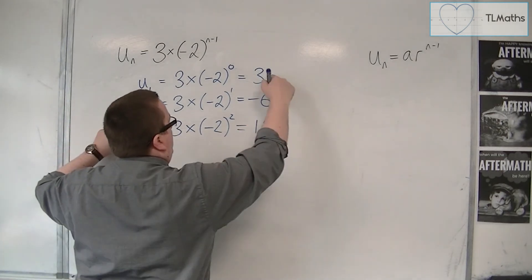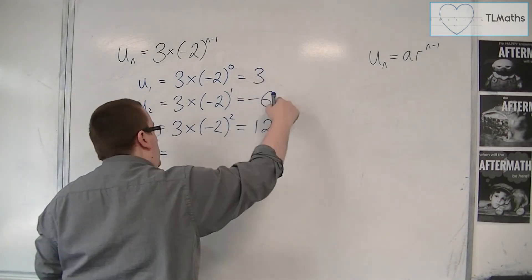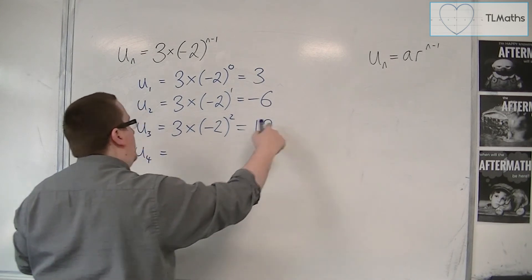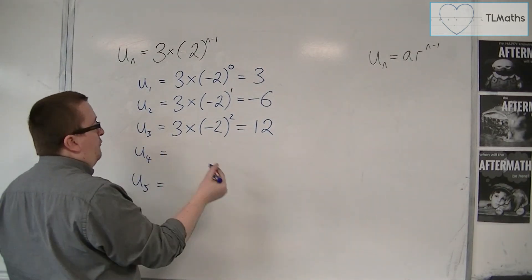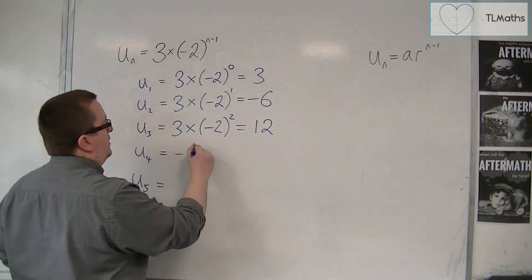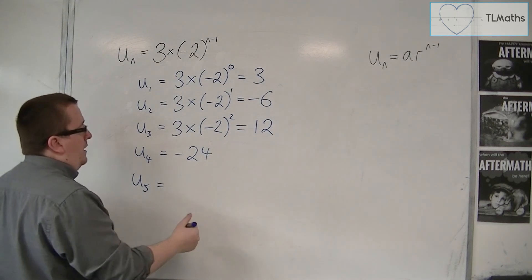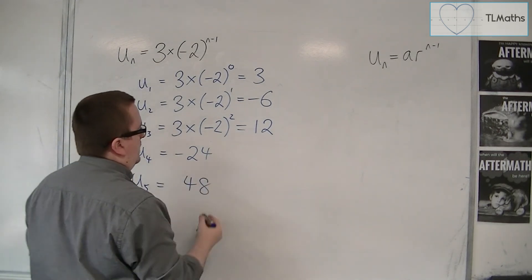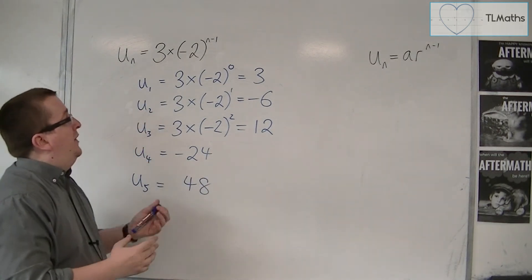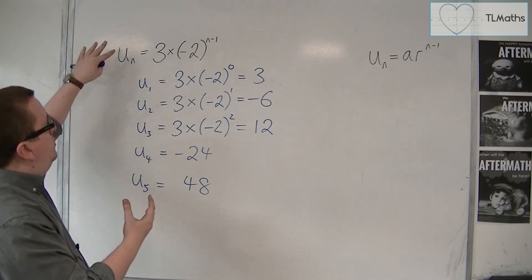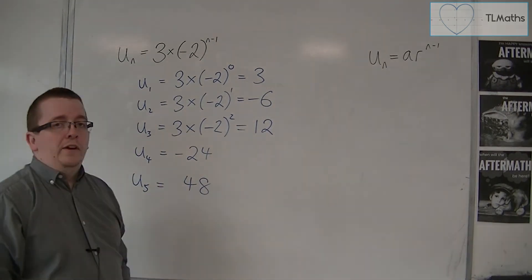So we can see that we're starting at 3 and multiplying by minus 2 each time. So u4 will be minus 24, and u5 will be 48. And that's how we can work with this nth term.